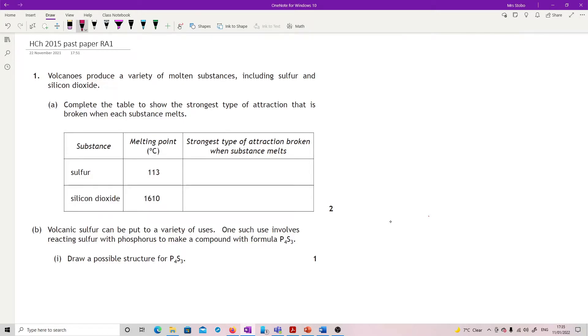Answer from 2015 past paper, this is question one. Volcanoes produce a variety of molten substances including sulfur and silicon dioxide. Complete the table to show the strongest type of attraction that is broken when each substance melts. We've got sulfur melting at 113 and silicon dioxide going at 1610. This is super high, this is reasonably low.